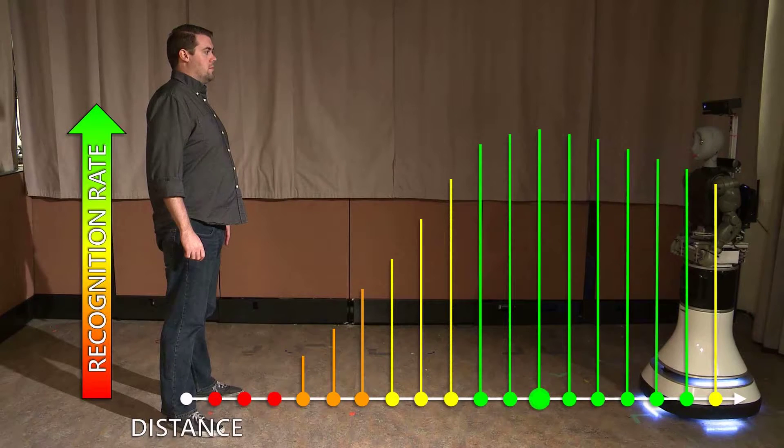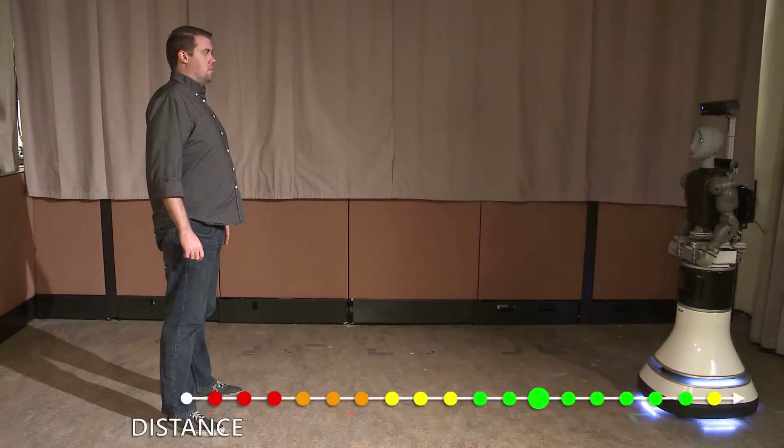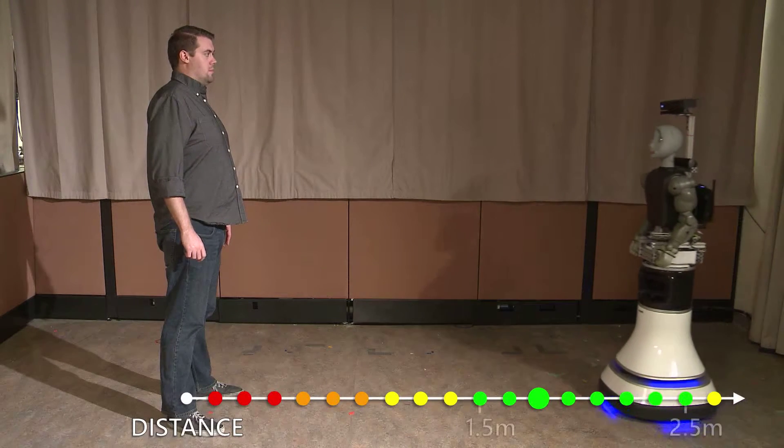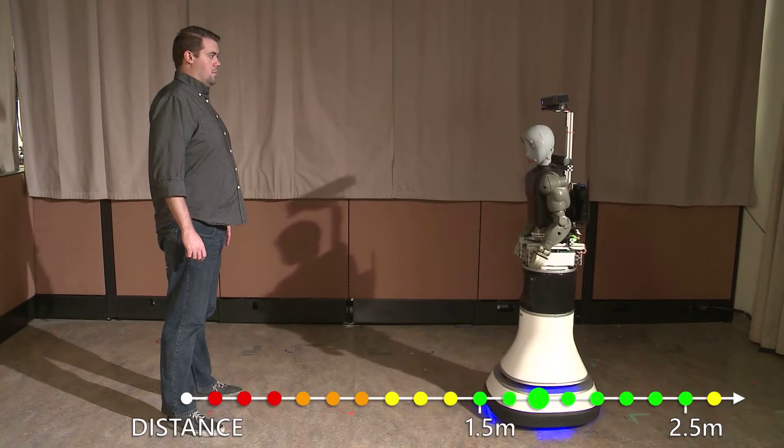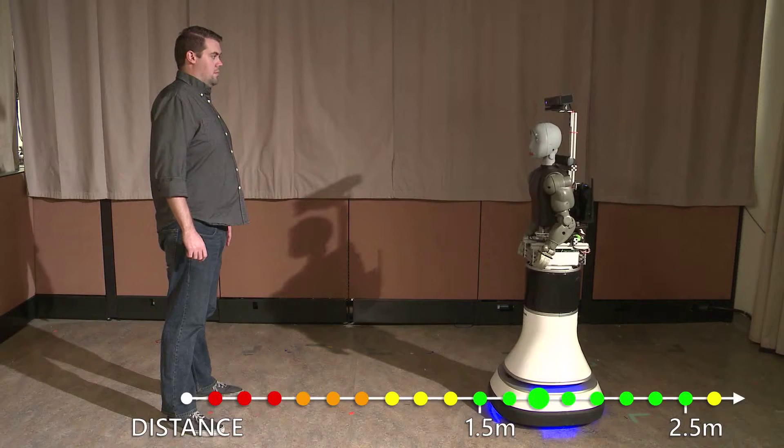Finally, the robot selects the location at which it predicts it will perform the best and moves to that location. Here, we see the robot predicts it will work well between 1.5 and 2.5 meters. The robot selects 1.7 meters as the optimal location to recognize human speech and gestures and moves there.